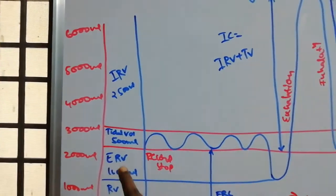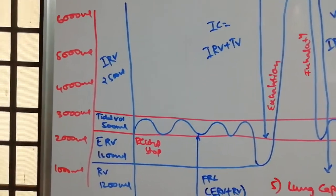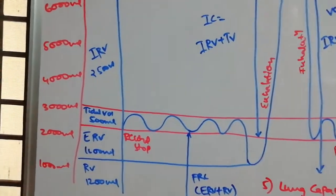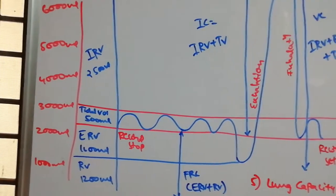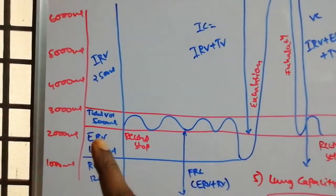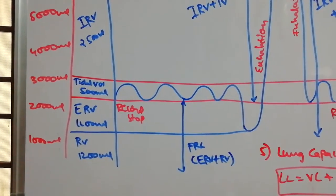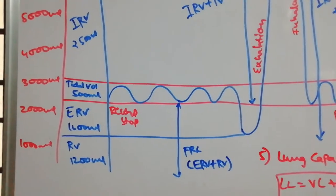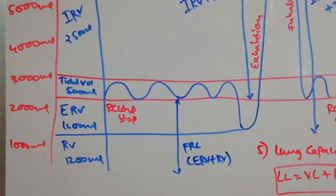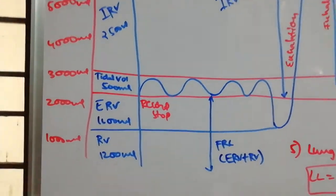Forceful inhalation beyond normal is the Inspiratory Reserve Volume (IRV), and forceful exhalation beyond normal is the Expiratory Reserve Volume (ERV). IRV is 2,500 to 3,000 ml, ERV is 1,000 to 1,100 ml. After forceful exhalation, the air remaining in the lungs is the Residual Volume (RV).